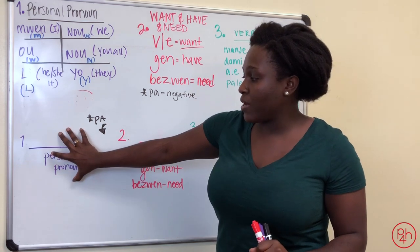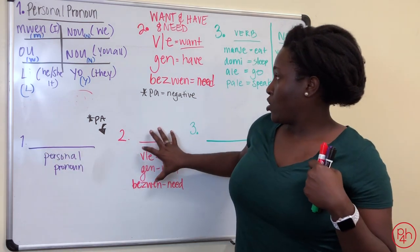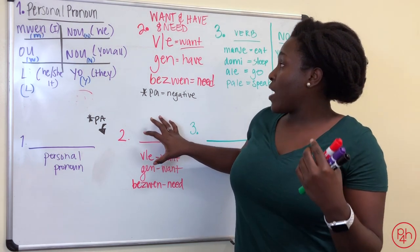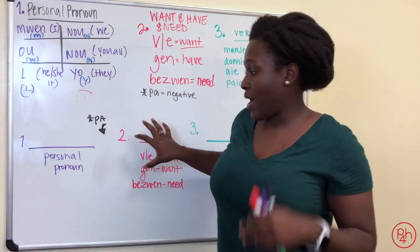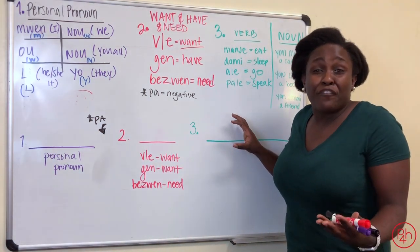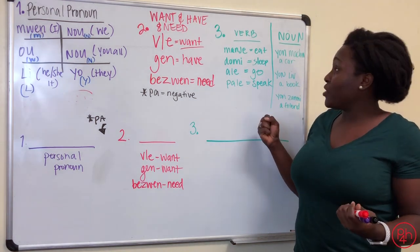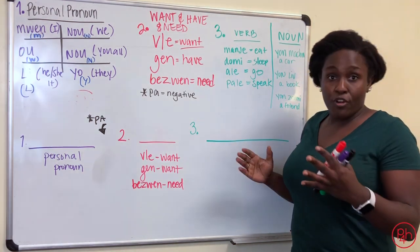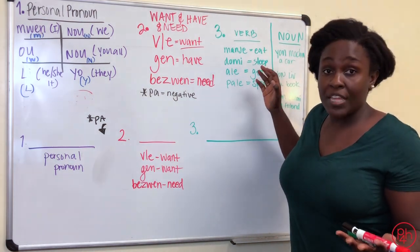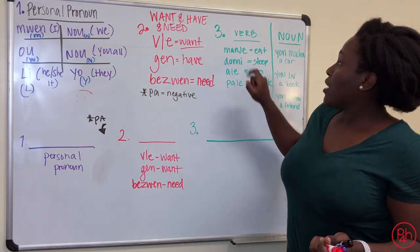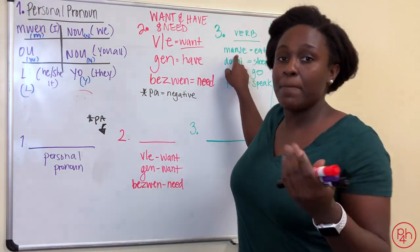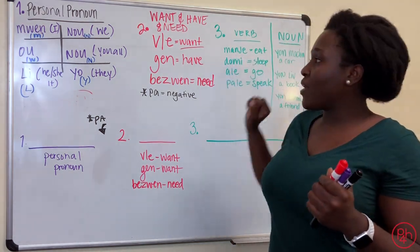So let's continue on with the sentence. You've got personal pronoun. Mwen. You go ahead and put whether you want, have, or need. Let's say mwen gen. Mwen gen. I have. Next, we move on to, you could put a verb, or you could put a noun there. A verb is an action, like you're doing something. A noun is a person, place, or thing.